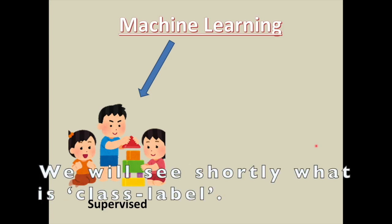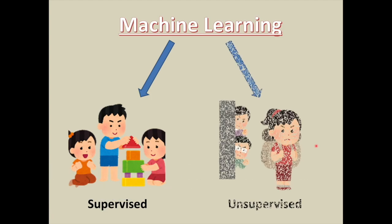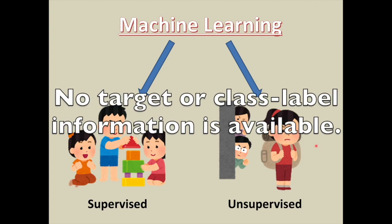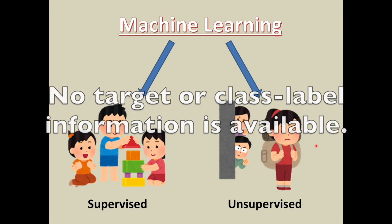We will see shortly what is class label. The second type is unsupervised learning, where as the name suggests, no teacher or parent is present and the kid has to find her way out. In other words, no target or class label information is available.